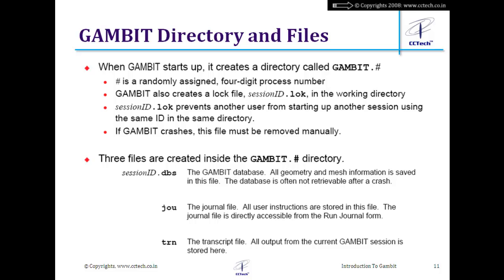The second file is the JOU file — the journal file. GAMBIT stores all commands executed by the user in this file. For example, if I create a cube using the GAMBIT GUI, GAMBIT internally executes a command and stores it in the journal file. Next time, instead of using the GUI, I can copy that command from the journal file and execute it directly.